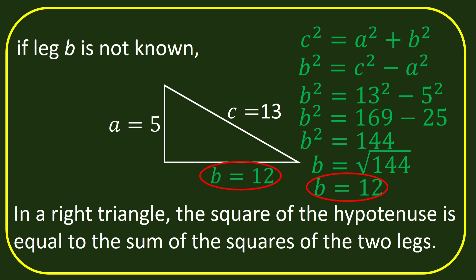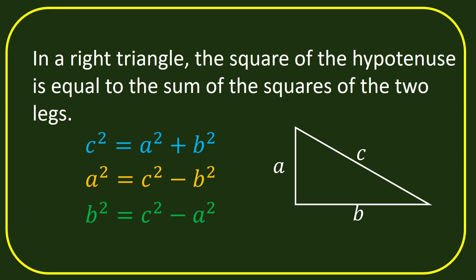Now let's review how to solve any side of the right triangle using the Pythagorean theorem. It says that in a right triangle, the square of the hypotenuse is equal to the sum of the squares of the two legs — that is, c squared is equal to a squared plus b squared. If the hypotenuse is unknown, we use c squared is equal to a squared plus b squared. If leg a is unknown, we use a squared is equal to c squared minus b squared. If leg b is unknown, we use b squared is equal to c squared minus a squared.